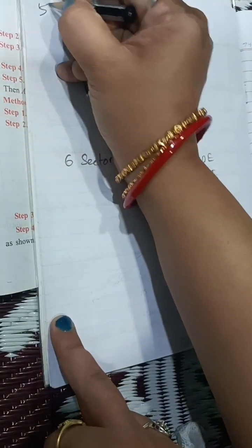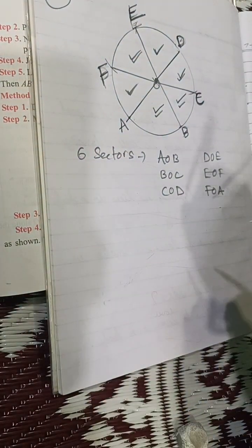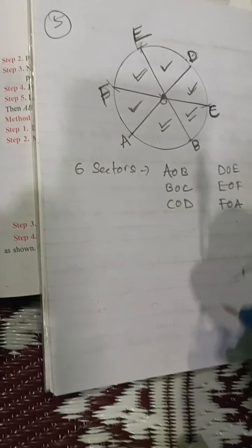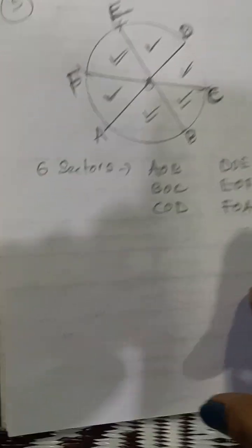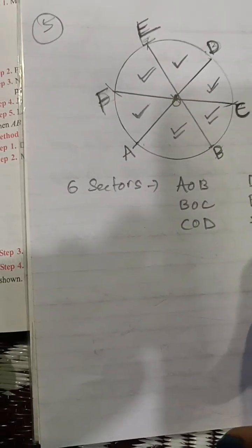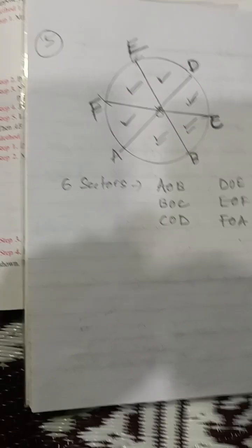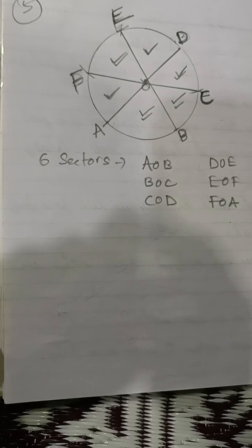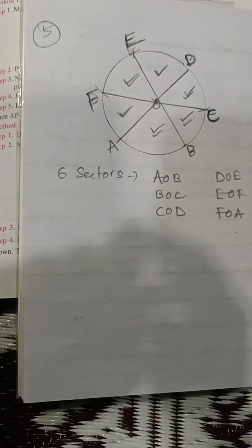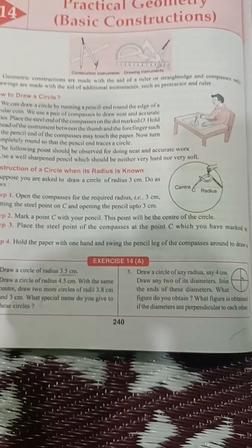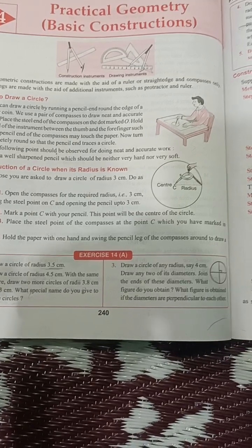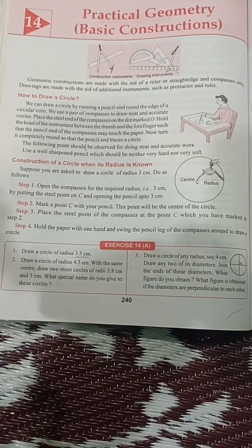This is question number 5. So this is the circle divided into 6 equal sectors: AOB, BOC, COD, DOE, EOF, and FOA. Now question number 4 and 5 are done from exercise 14A, chapter 14, practical geometry, basic construction of composite mathematics, class 6.